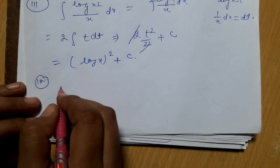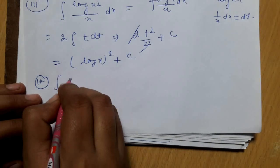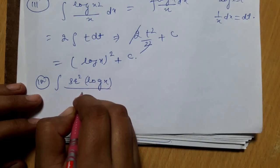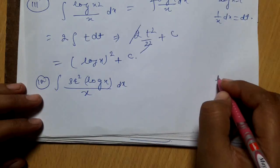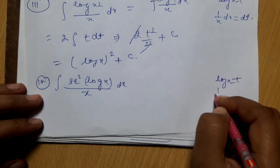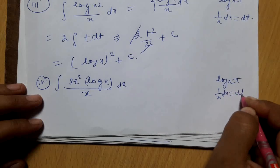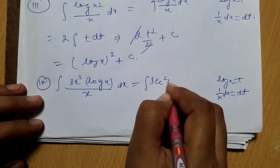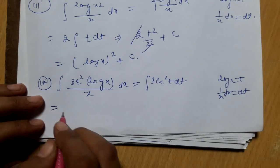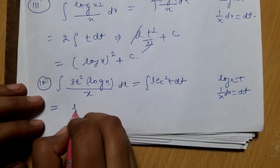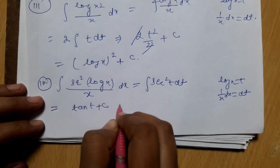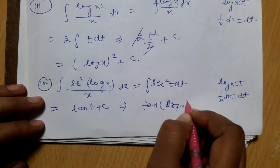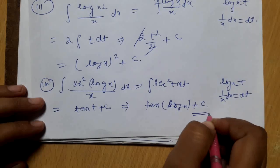Part 4: integration of sec²(log x) / x dx. Put log x = t, so 1/x dx = dt. The integral becomes ∫sec²t dt = tan t + c. Substituting back, the answer is tan(log x) + c.